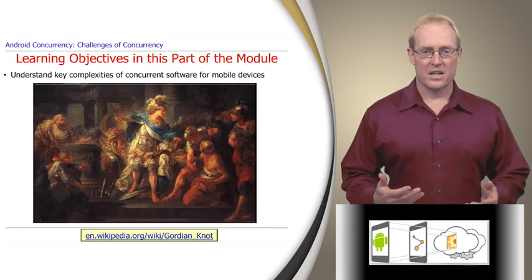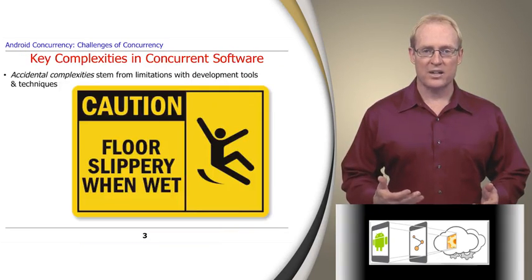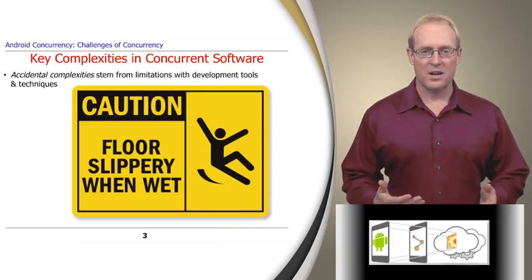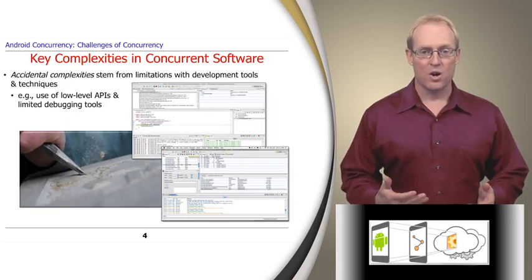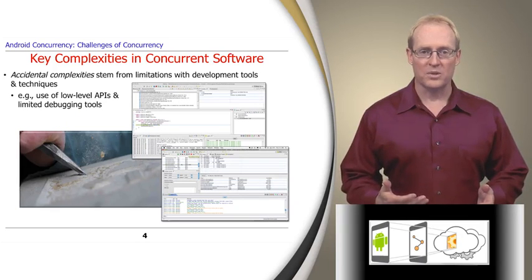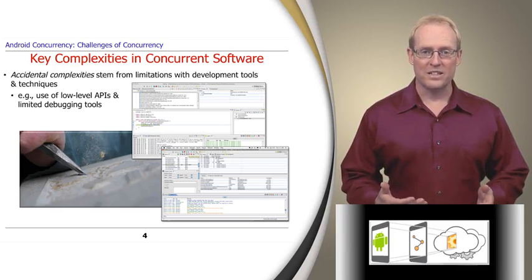Some of these challenges are called accidental complexities, which arise from limitations with the tools, techniques, and methods we commonly use to build software. For example, concurrent programs are often written using low-level application programming interfaces written in languages like C and debugged using tools that aren't well equipped to detect common hazards of concurrent programming. All too frequently these problems are self-inflicted because we don't always have to use these tools, techniques, and methods — it's often just conventional wisdom or common practice.